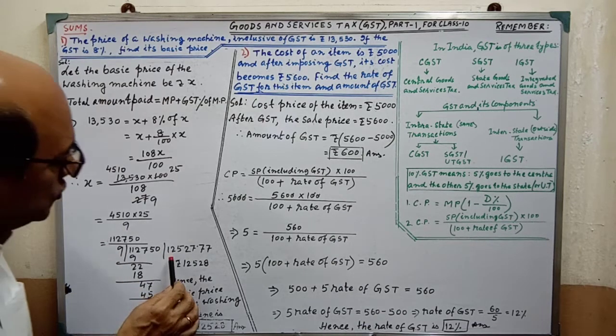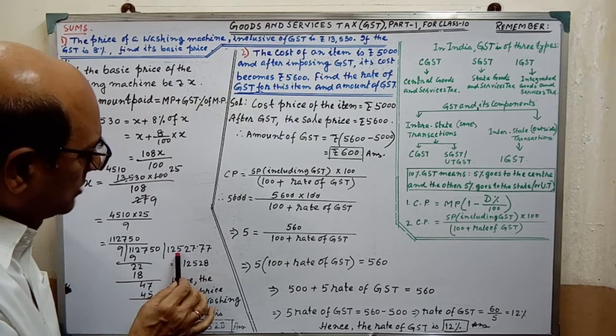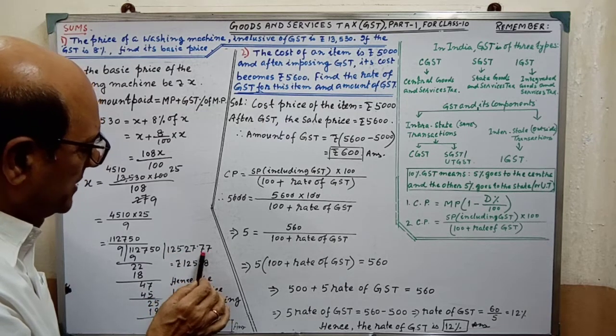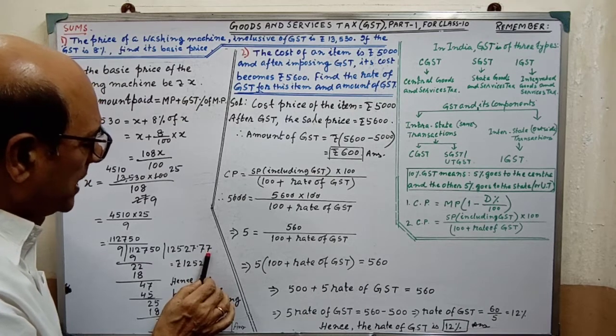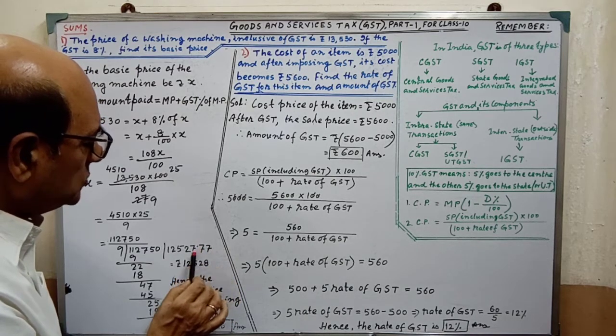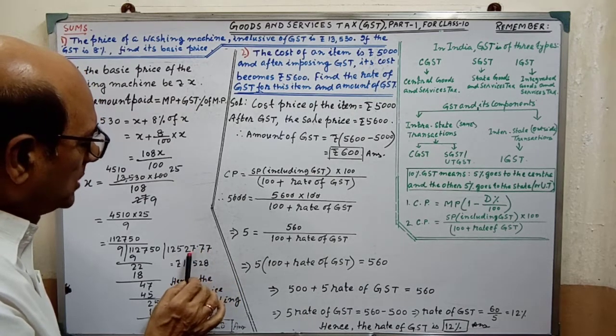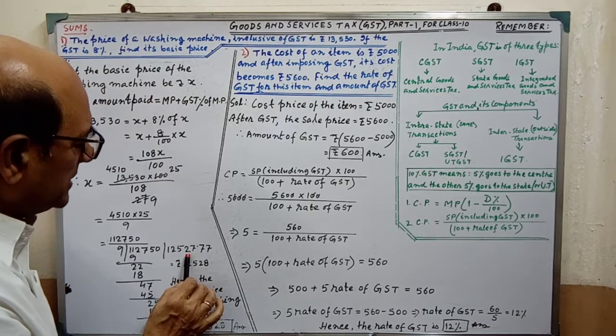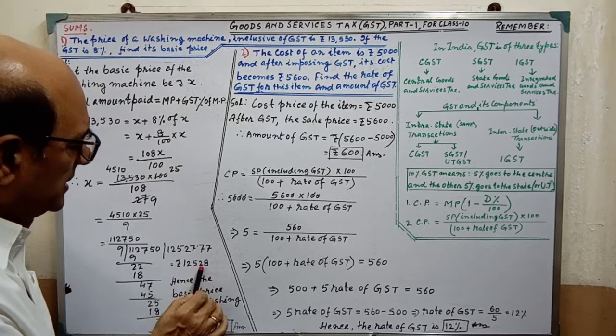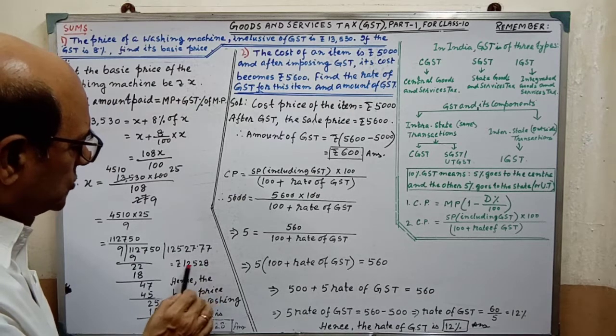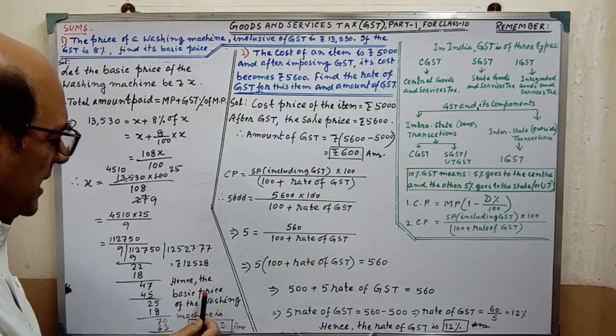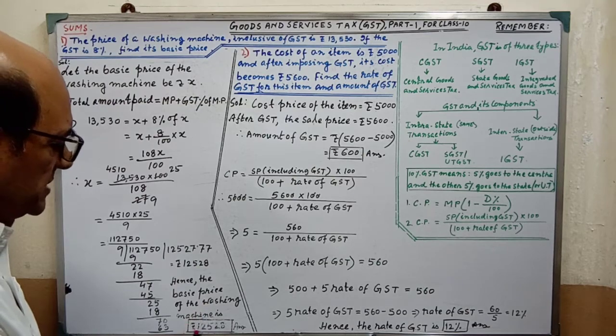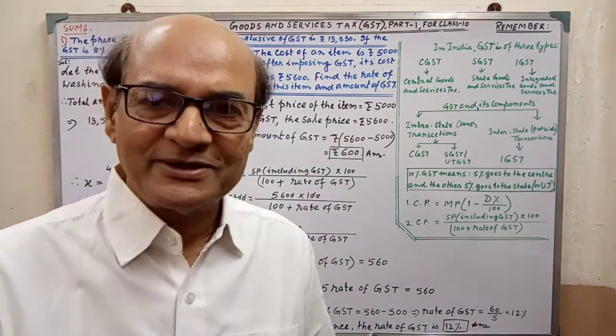In division we are getting 12,527.77. After the decimal point it is coming more than 50, so we have to make it round and 1 will be added with the integer part. Instead of 27 it will be 28, so Rs. 12,528. Hence the basic price of the washing machine is this. The sum is completed.